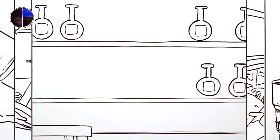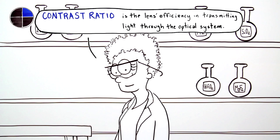The second critical benchmark for capturing a vivid image is a high contrast ratio, which is the lens's efficiency in transmitting light through the optical system while minimizing reflections that pollute the image.